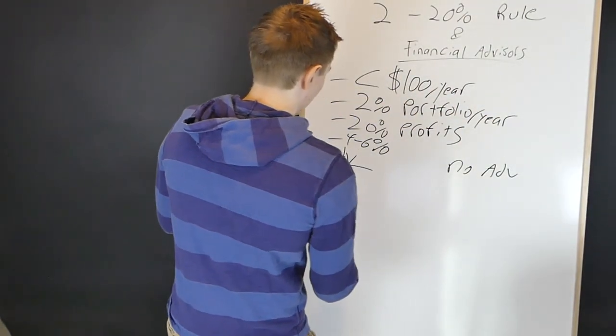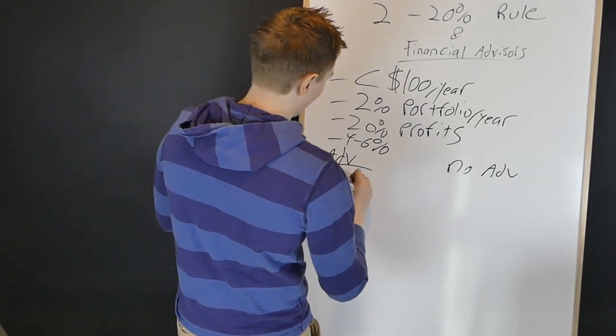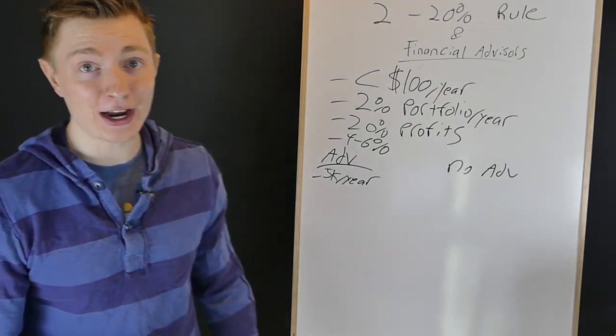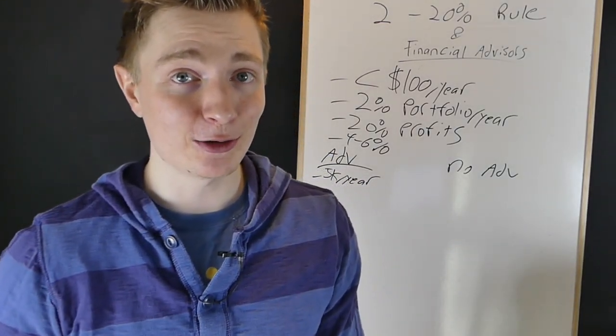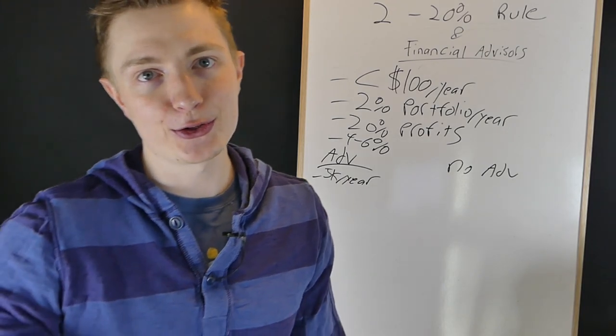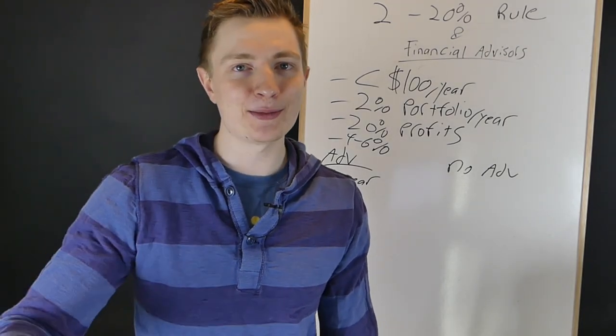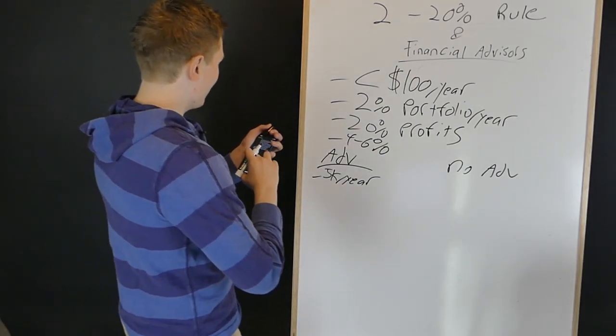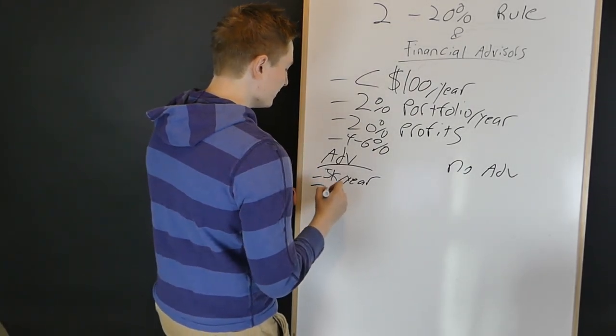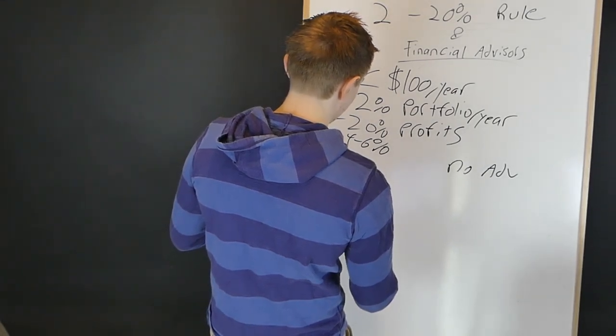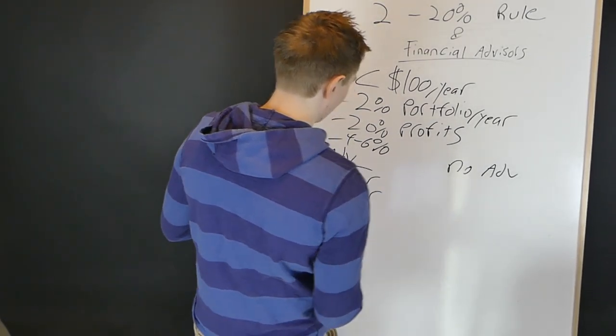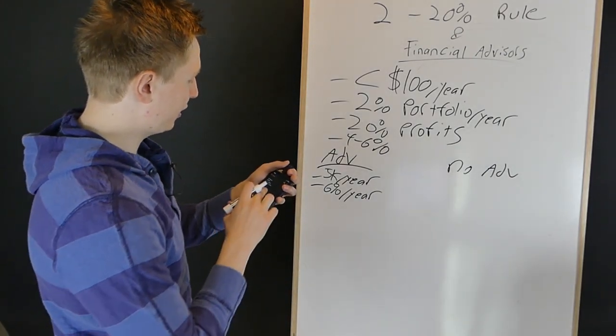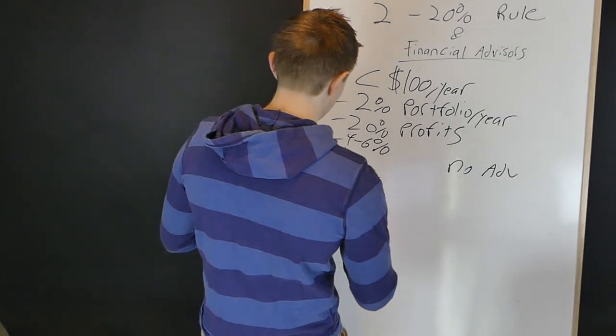So we're going to say that every single year you put in $5,000 into this investment account. If you had a financial advisor, a lot of the times they'll just take it right out of your accounts. Sometimes they'll take it right out of your paycheck. There's lots of different avenues. We're going to say that they get a 6% return per year. That's not bad. That's average, a little bit above average maybe for some people, a little bit below for others. And we're going to say this happens over 30 years.